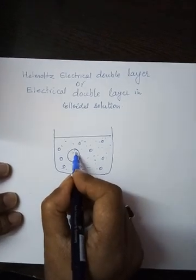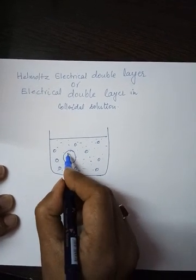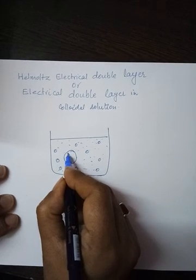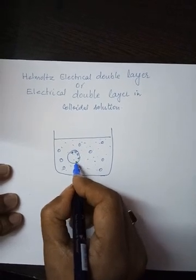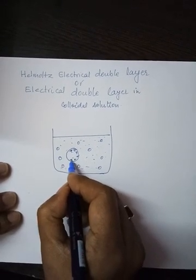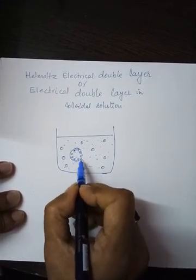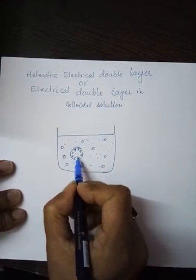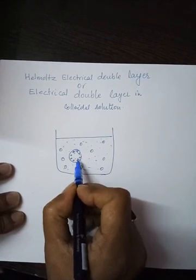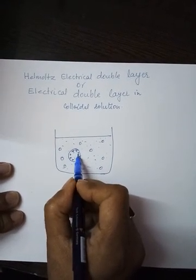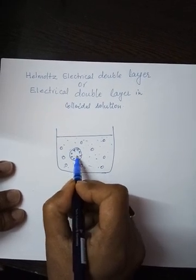In any colloidal solution, all colloidal particles always carry some charge — either positive or negative. In this case, we take it to be positively charged. The particle has adsorbed positive charges on its outer surface, forming a layer of positive charges. These charged particles are adsorbed strongly at the surface, so they are fixed on the surface.